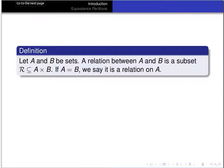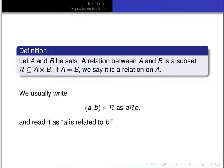Now although R is a set of ordered pairs, instead of writing that an ordered pair (a, b) is an element of R to say that a is related to b, we usually write that as ARB and read it as 'a is related to b.'